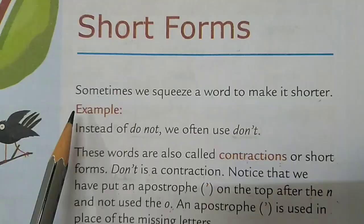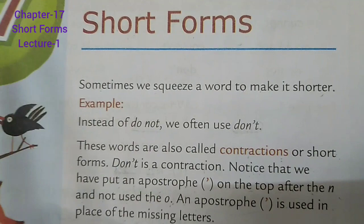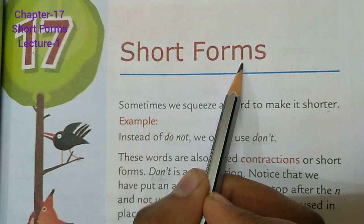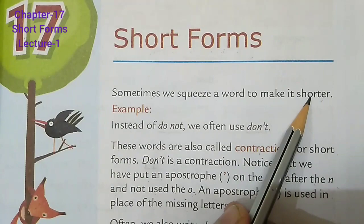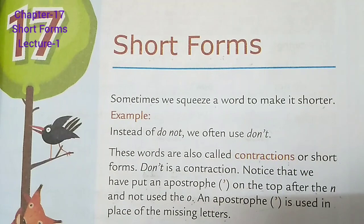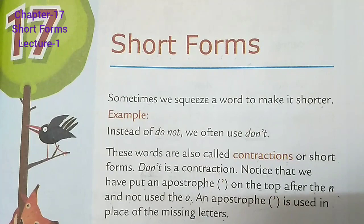Today we will study about short forms — chapter 17, which is on page number 67. Topics to be covered in this lecture: we will do explanation, rules, and book exercises. Short forms are words that are the shortened versions of full forms. Sometimes we squeeze a word to make it shorter.